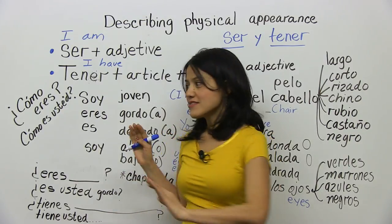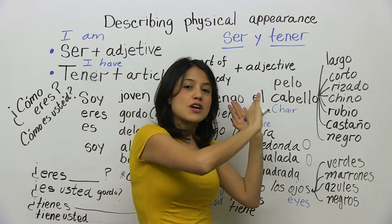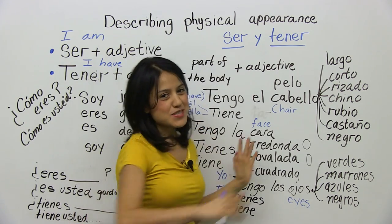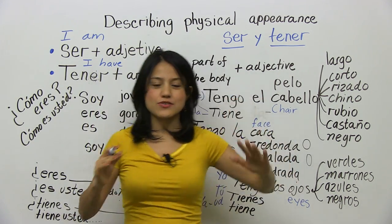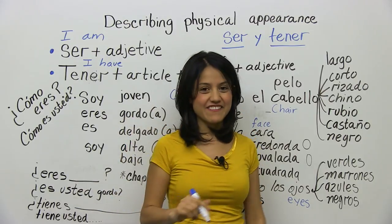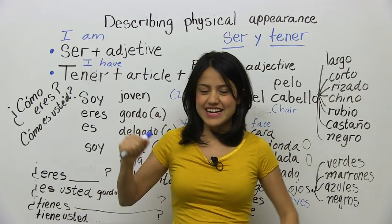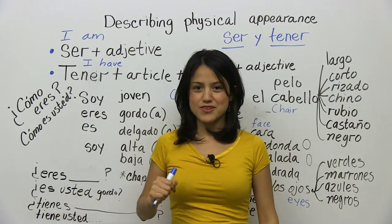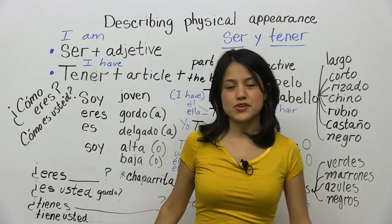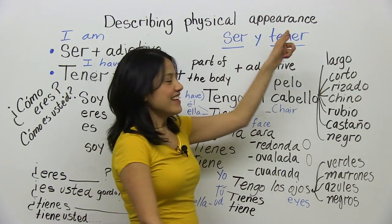Bueno, to start our lesson first, we're going to learn the verbs that you're going to use to describe yourself, and then with those verbs we're going to learn how to use them with nouns and adjectives — all that headache that you might get speaking Spanish grammar. But this is going to be very easy, so stay with me and let's learn. The two verbs you're going to use to describe yourself are: ser and tener.